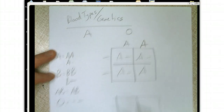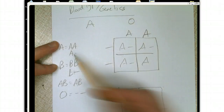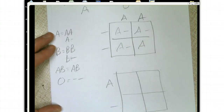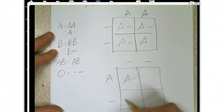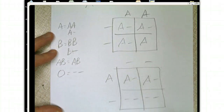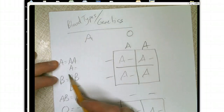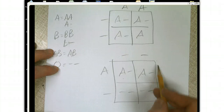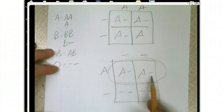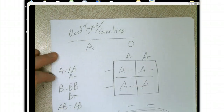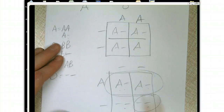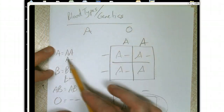However, let's say this parent is A blank. They're going to make gametes with the alleles A and blank. The other parent only has blanks. So we get A blank, blank blank, A blank, blank blank. So if the parent that's type A is A blank, then you can have 50% of the kids getting A blood and 50% getting O blood. If your parents were A and O, and you have O blood, that means this parent must be A blank.